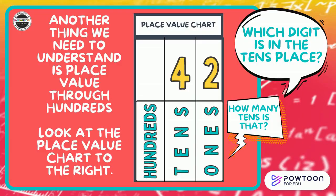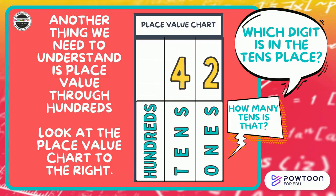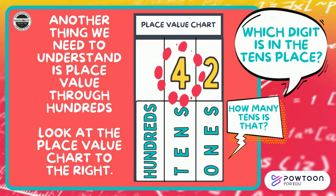Another thing we need to understand is place value through hundreds. Look at the place value chart to the right. Which digit is in the tens place? How many tens is that? Did you say four is in the tens place? Did you say that's four tens? That's worth 40, isn't it?